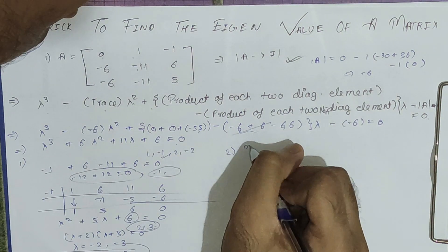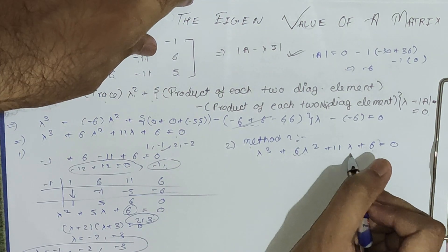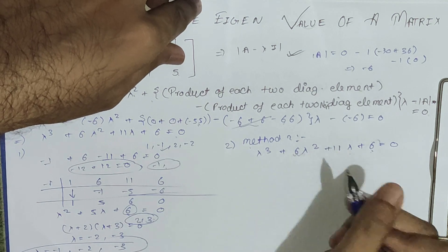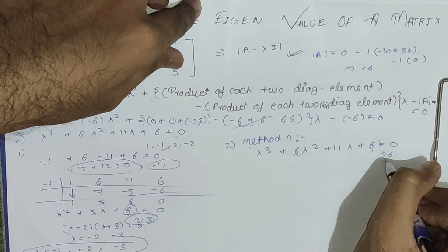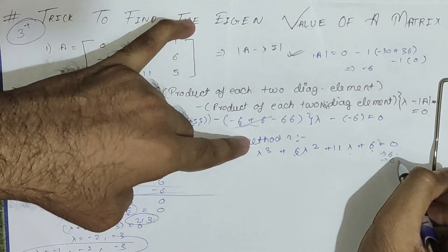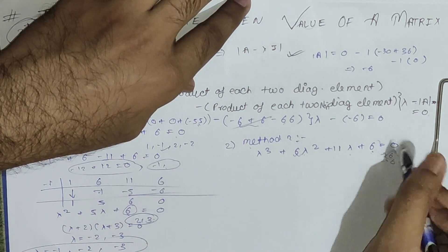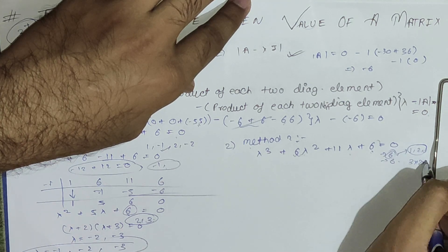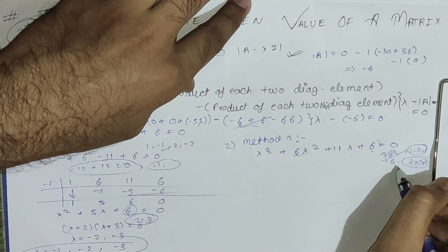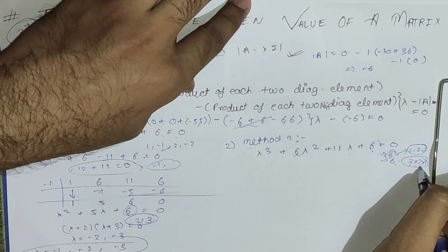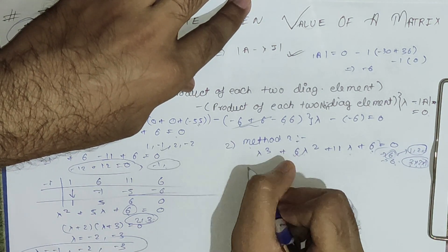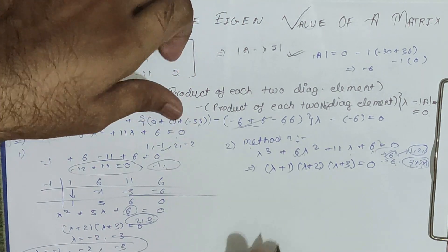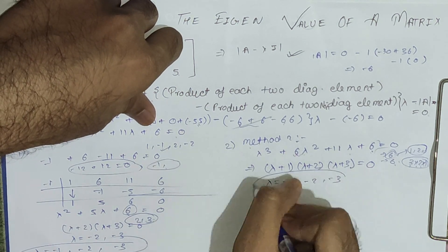Now Method 2 — my favorite, because it gives the roots in three to four seconds. We need three roots whose product equals the last coefficient (6) and whose sum equals the second coefficient (6). The factors of 6 can be 1, 2, and 3. Check: 3 times 2 times 1 equals 6 ✓, and 1 plus 2 plus 3 equals 6 ✓. So (lambda plus 1)(lambda plus 2)(lambda plus 3) equals zero, giving eigenvalues minus 1, minus 2, and minus 3.